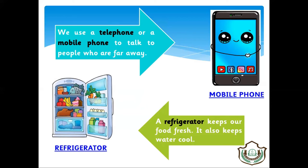The third one is the refrigerator. Refrigerators keep our food fresh and also keep water cool. When you come home, you can open the fridge and drink cool water. If you don't have a refrigerator, you can't keep your food safe. The refrigerator also works on electricity.